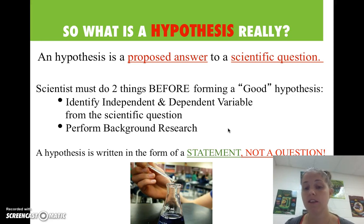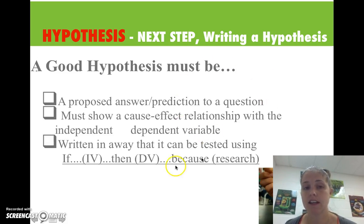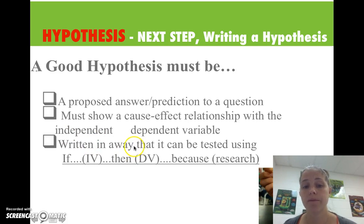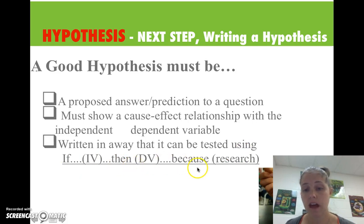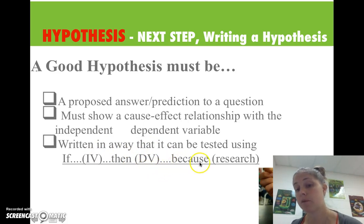A hypothesis is written in the form of a statement, not a question. When we write a hypothesis, it needs to be a proposed answer or prediction to a question. It has to show that cause and effect relationship with our independent and dependent variable, and it needs to be written in a way that can be tested using if, then, and because. So: if the independent variable, then the dependent variable, because of whatever you researched.